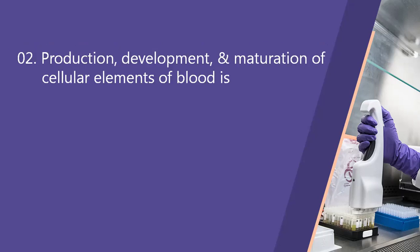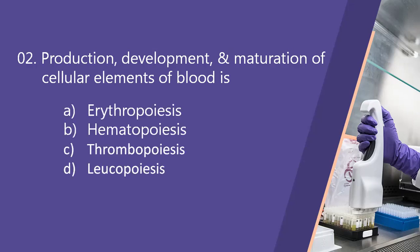Next question: production, development and maturation of cellular elements of blood is? Option A, erythropoiesis. Option B, hematopoiesis. Option C, thrombopoiesis. Option D, leukopoiesis. Here the right answer is option B, hematopoiesis.